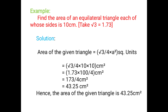Example 2: Find the area of an equilateral triangle each of whose sides is 10 cm. The formula for equilateral triangle is root 3 by 4 into A squared. We substitute root 3 as 1.73 and A as 10 cm. So area equals 1.73 into 100 divided by 4, which equals 173 by 4. The answer is 43.25 cm squared. The area of the equilateral triangle is 43.25 cm squared.